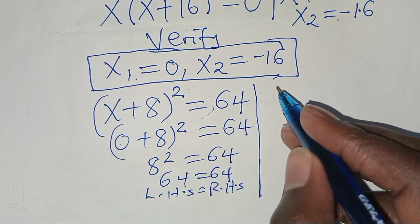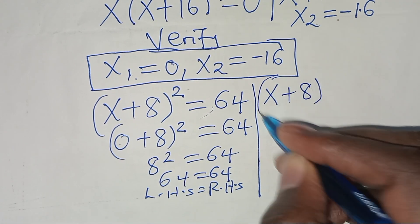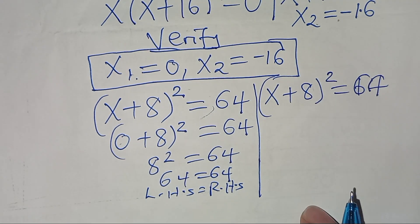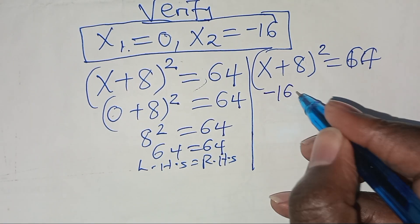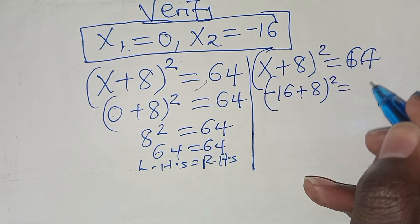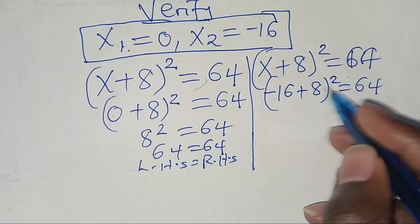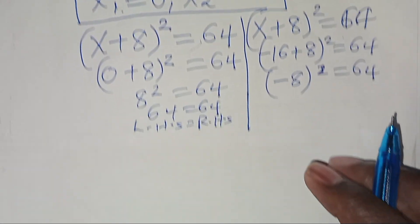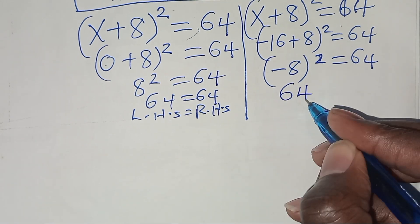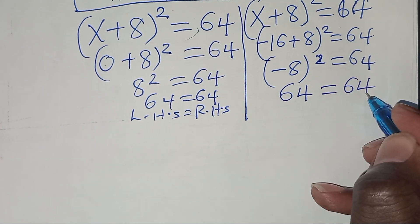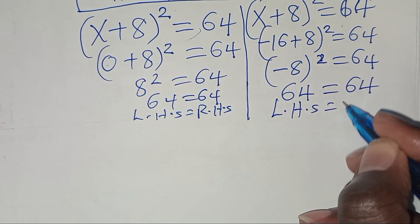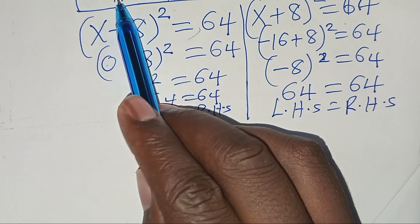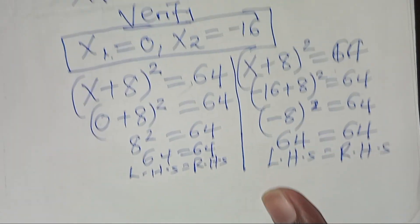For x2, we substitute into x plus 8 squared equal to 64. We get negative 16 plus 8 squared, which is negative 8 squared, equal to 64. Negative 8 squared is 64, which equals 64. The left-hand side equals the right-hand side, confirming that both x1 and x2 satisfy the equation.